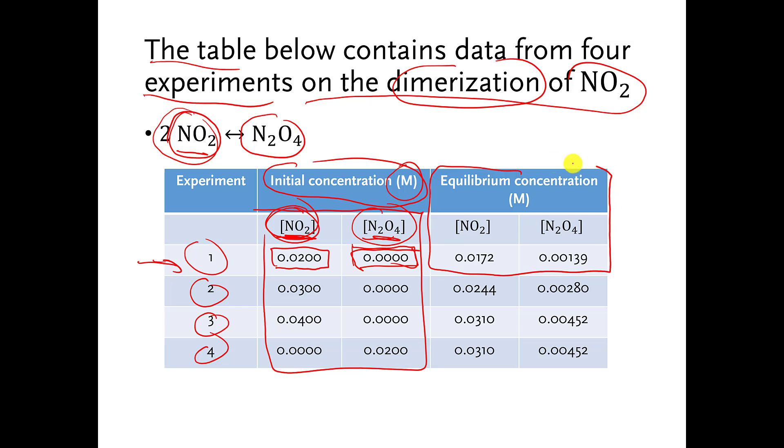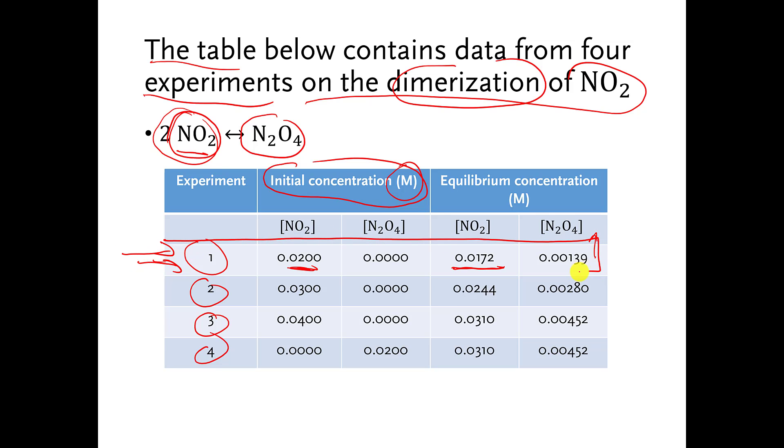And then they measure the concentration once the concentration stopped changing. In other words, once we hit equilibrium, what's the concentration of NO2 in units of molarity? Well, it's a little bit less. It used to be 0.02, now it's 0.0172. And over here, the concentration of N2O4, it's not 0 anymore, it went up a little bit, it's 0.00139. And so you can figure out the equilibrium constant for the reaction in experiment 1 if you use these numbers and plug them into the appropriate formula.